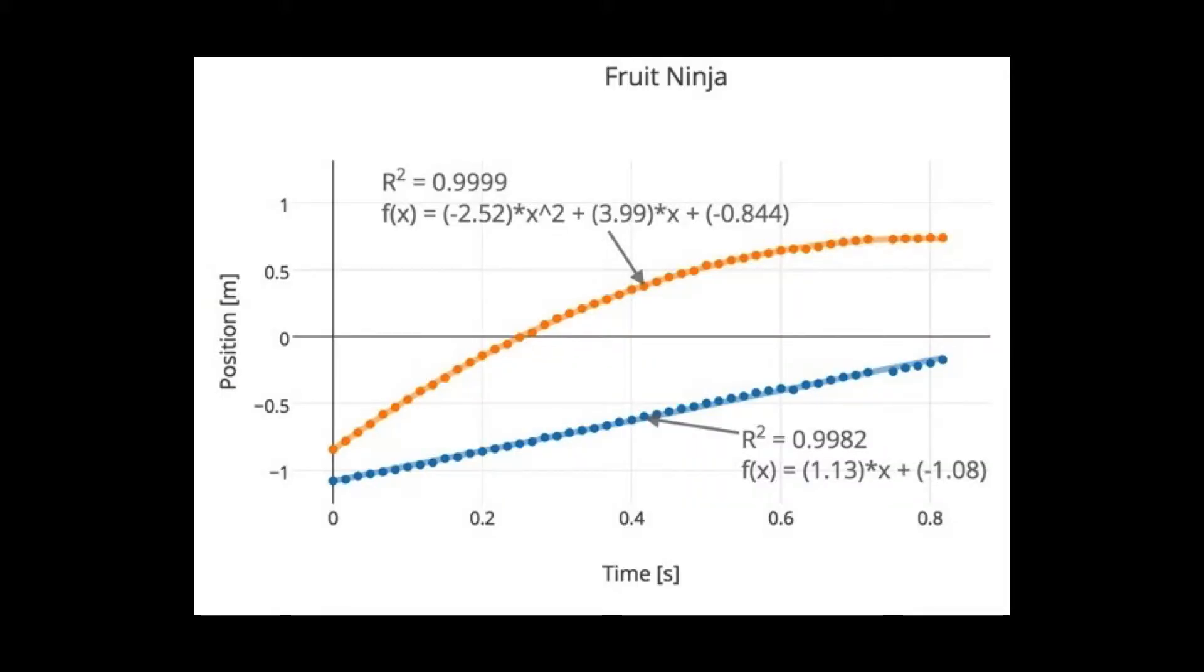So what if I were to actually plot the position of a fruit in the game? You can do this with the video analysis tools, and here is a plot of both the vertical motion in the orange data and the horizontal motion in the blue data. And you can see that they do seem to agree with projectile motion. The blue horizontal data is a constantly changing position, which would be a constant velocity. That's exactly what we would expect.